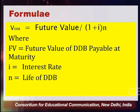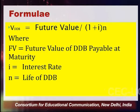Unlike other bonds where you receive interest regularly and the maturity amount once, here you receive only one cash flow at maturity. The formula for the value of a DDB is: Value of DDB = Future Value ÷ (1 + i)^n, where future value is the maturity value payable at maturity, i is the rate of interest, and n is the life of the deep discount bond.